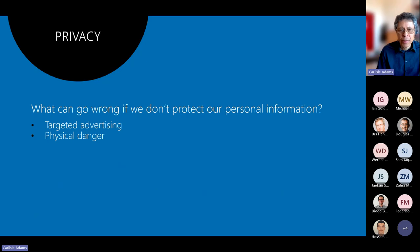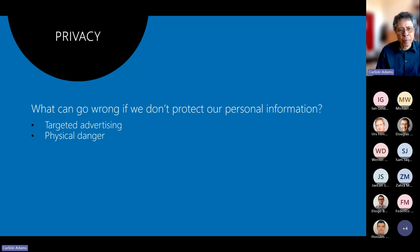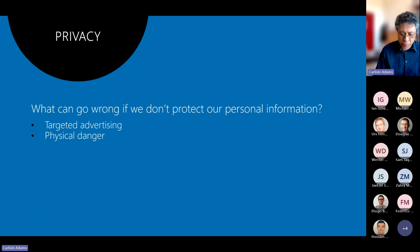A slightly larger privacy concern is physical danger. If somebody knows where you are because you post that every morning at 5am you go jogging in the woods, then if somebody wants to do you harm, they can just wait there. On the flip side, if somebody knows you're going to be at a party Friday night, that means you're not going to be at your home, and maybe that's a perfect time to break in. Physical danger includes danger to ourselves but also to our belongings or assets.